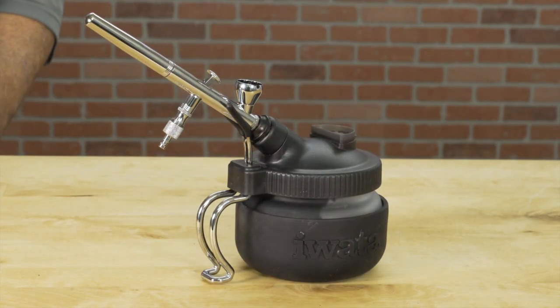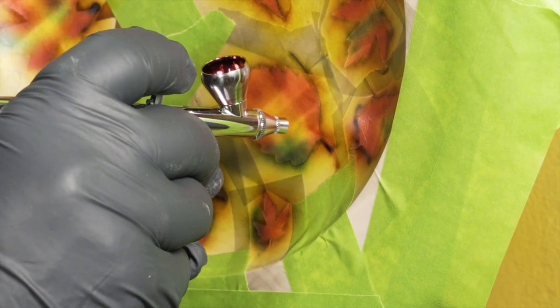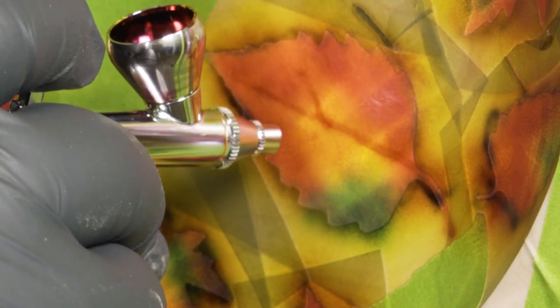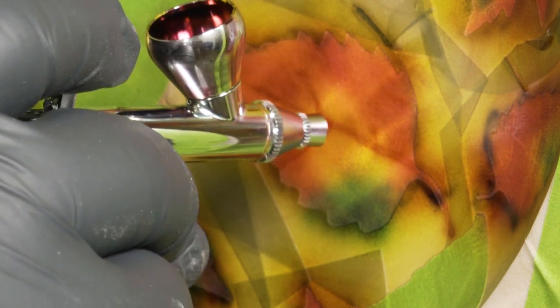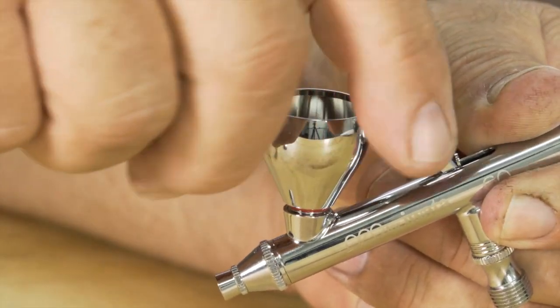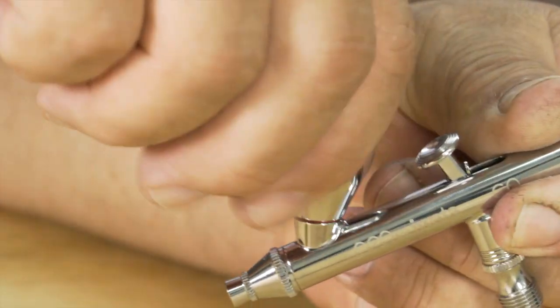The Neo gravity feed airbrush includes a 0.35 millimeter needle and nozzle assembly, perfect for fine detail work to a medium spray pattern. It includes interchangeable one-third ounce and one-sixteenth ounce cups.